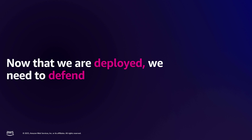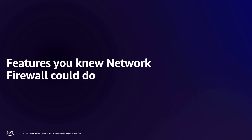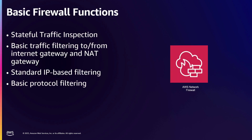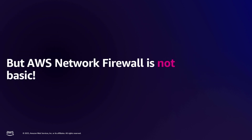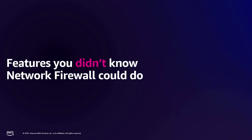Now that we're deployed, let's talk about defending. There are features you probably knew Network Firewall could do — things you'd expect from a firewall: stateful traffic inspection, filtering traffic in and out of NAT gateways, IP-based filtering, and basic protocol filtering. Yes, it does all that basic stuff. But Network Firewall is not basic — it's got a lot of other features, maybe features you don't know about.